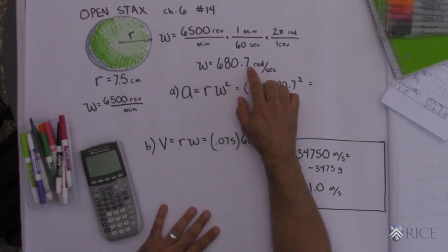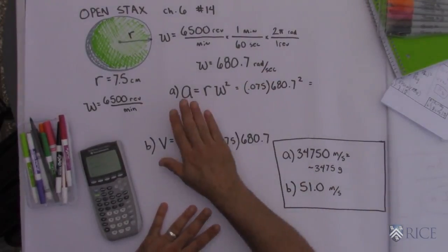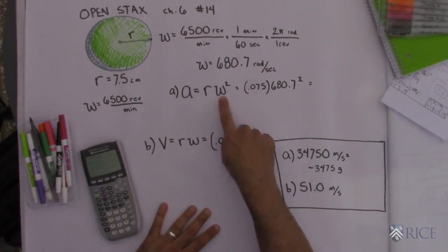So to convert that I need to take 6,500 times my 2 pi radians divided by 60 seconds. And when I did, I got 680.7 radians per second. Well they didn't want me to find that, I just had to find that in order to get the centripetal acceleration.